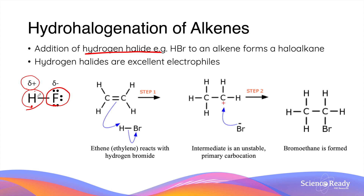This, in turn, allows the electrons in the alkene's double bond to initiate a reaction, as they are attracted to the positively charged hydrogen atom in the hydrogen halide molecule. The movement of electrons breaks the double bond and allows the hydrogen atom to be added to the organic molecule. Now that the double bond is broken, the other carbon atom is missing a covalent bond, so it becomes positively charged.